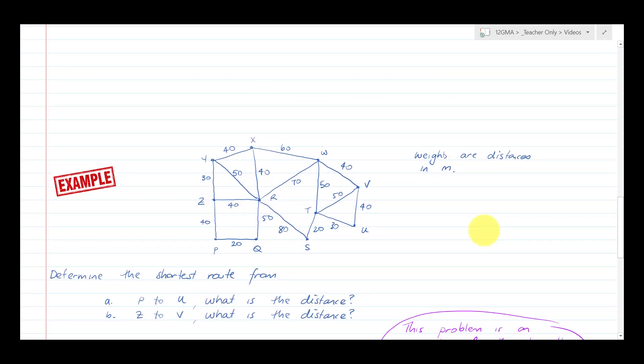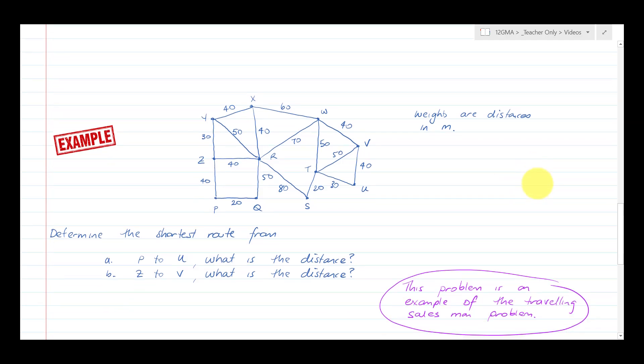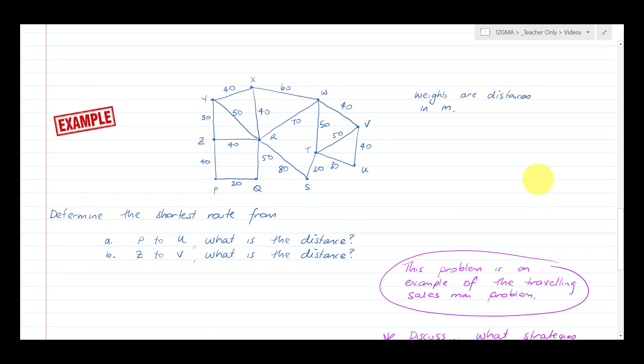Here's a second example. The weights are distances in meters. So here's a fairly extensive graph. Determine the shortest route from P to U. So let's start by highlighting P and highlighting U over here and start talking about shortest distances.